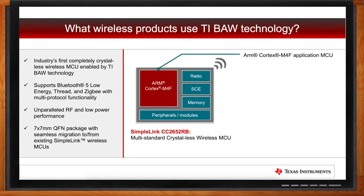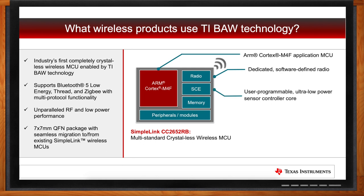The device is made up of an ARM Cortex M4F application MCU dedicated to the user to create their application. Additionally, it has a software-defined radio with its own core that can support Bluetooth 5, Thread, and Zigbee on this BAW device. There's also a unique third core called the sensor controller engine — a TI proprietary core that is ultra-low power and user-programmable, which you can use to interface with device peripherals in a very low-power way.